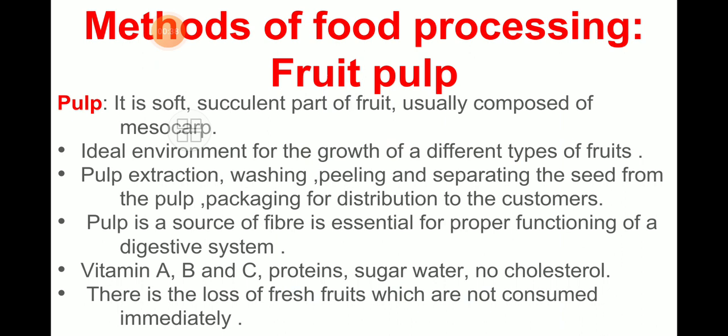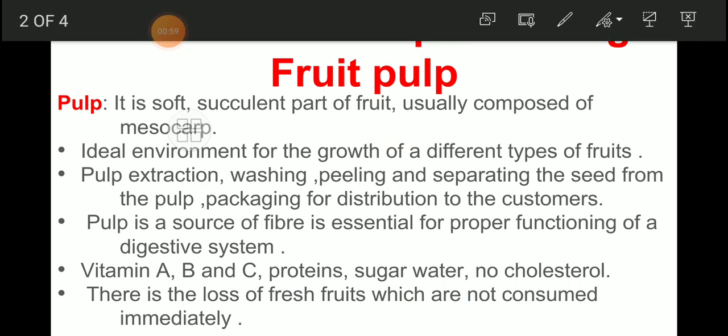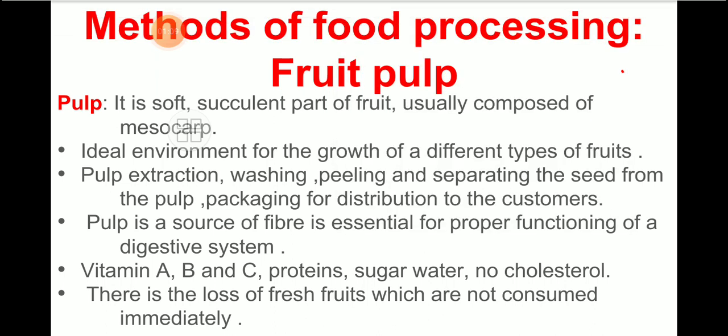Students, we have been studying and learning many methods used for fruit processing. Fruit pulp is another method. In previous lectures we got an idea about preparation of jam, preparation of squash, and preparation of chips.